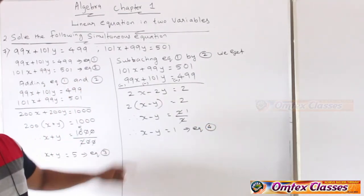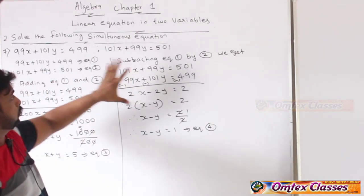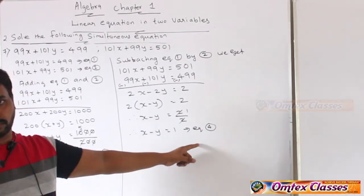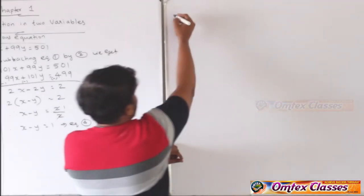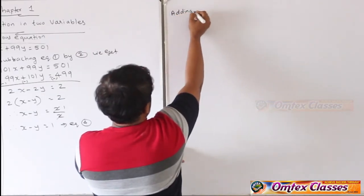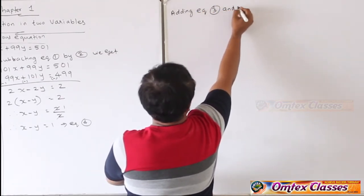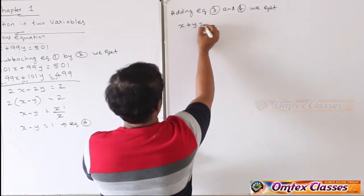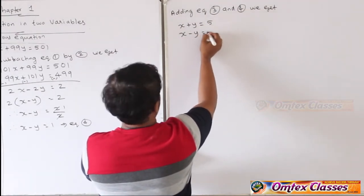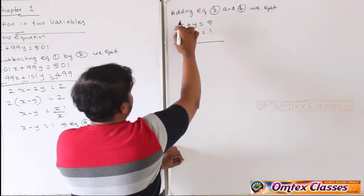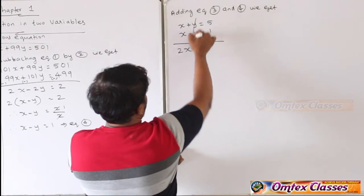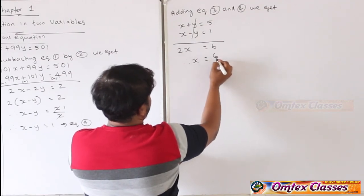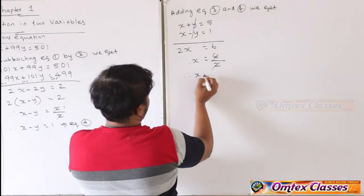अब दो नए equations मिले। Rule के हिसाब से पहले add किया, subtract किया — अब वापस adding करनी पड़ेगी। Adding equation number 3 and equation number 4: x plus y equal to 5, और x minus y equal to 1. Add करने पर x plus x = 2x, y और minus y cancel हो जाएगा, 5 plus 1 = 6. Therefore x equal to 6/2.